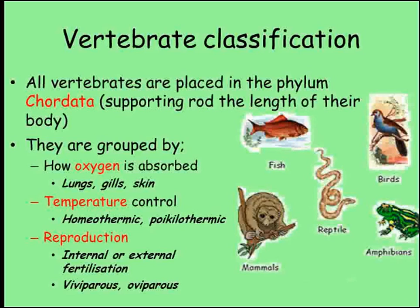Vertebrate animals all belong to the phylum chordata, which means they have a supporting rod running down the length of their body — in vertebrates, this rod is the backbone. There are five vertebrate groups, and animals with a backbone are placed into one of these groups based on three areas of variation. The first is how the animal absorbs oxygen from the environment. Mammals, birds and reptiles get oxygen from the air through their lungs. Fish and young amphibians have gills to absorb oxygen dissolved in the water, and some amphibians when they are adults are able to absorb oxygen directly through their skin.